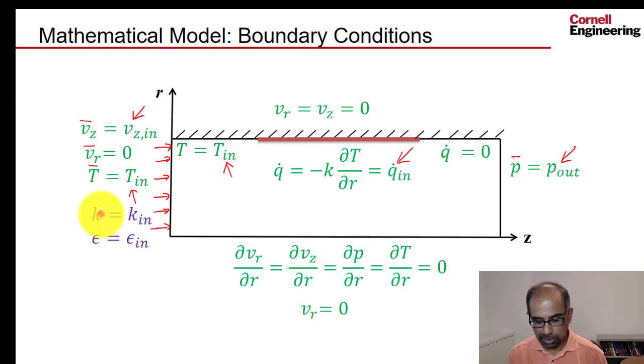And we need to specify k and epsilon at the inlet. So this is something we need to specify as users. And what we do is we pick values corresponding to low values of turbulence, because most of the turbulence is going to be generated in the boundary layers near the wall.